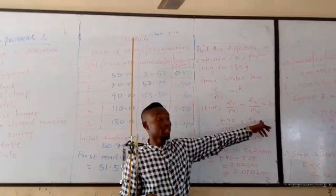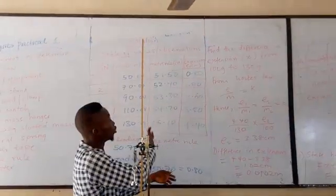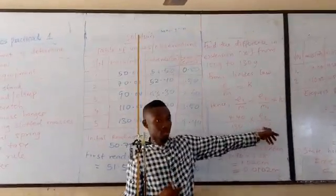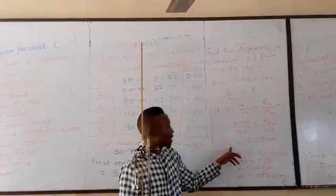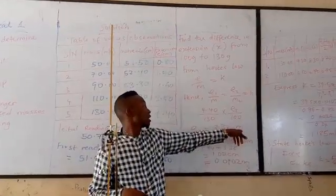is equal to the extension, which we don't know, all over the mass of 100 grams. Solving, we will have that the extension is 3.38 centimeters.